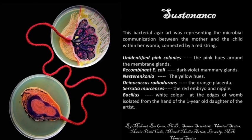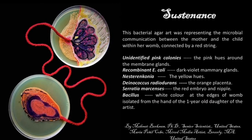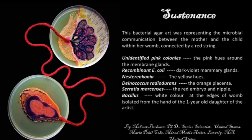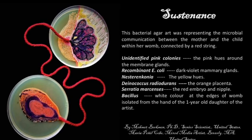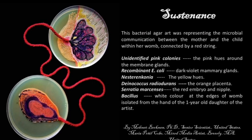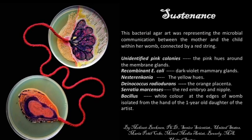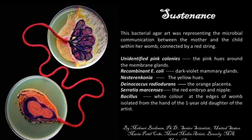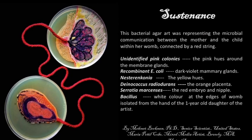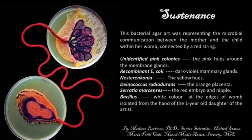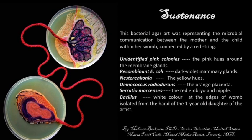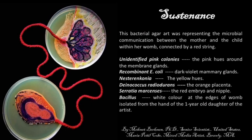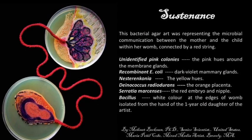This bacterial Agar Art represents the microbial communication between the mother and the child within her womb, connected by a red string. Microbes were isolated from the artist by pressing an Agar plate onto her breasts. Unidentified pink colonies isolated from around the nipple area were used to draw the pink hues around the mammary glands. Recombinant E. coli expressing the violet sheen biosynthetic pathway were used to draw the dark violet mammary glands.